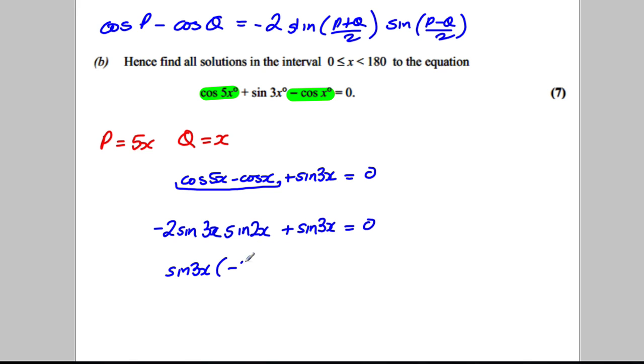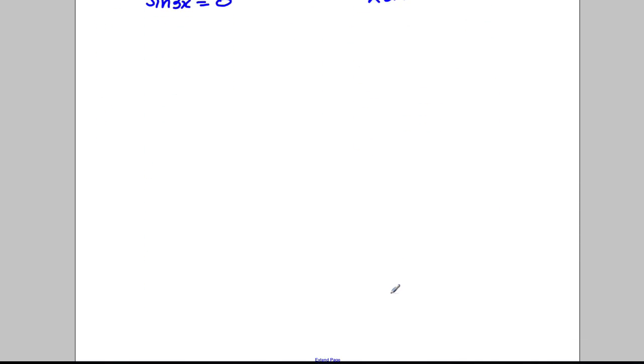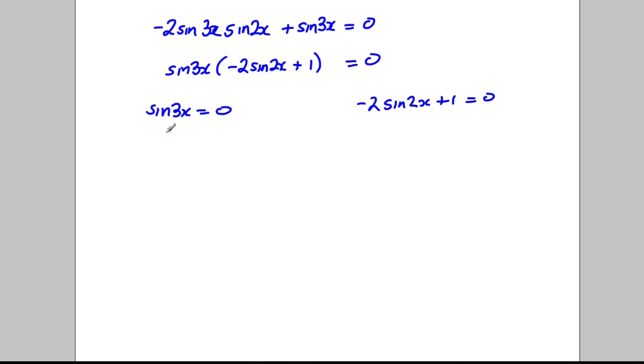So what could I do here? Factorize sin 3x. So sin 3x factorized out, I get -2 sin 2x + 1 is 0. So the things I'm looking to solve are sin 3x is 0 or sin 2x is going to be equal to a half.